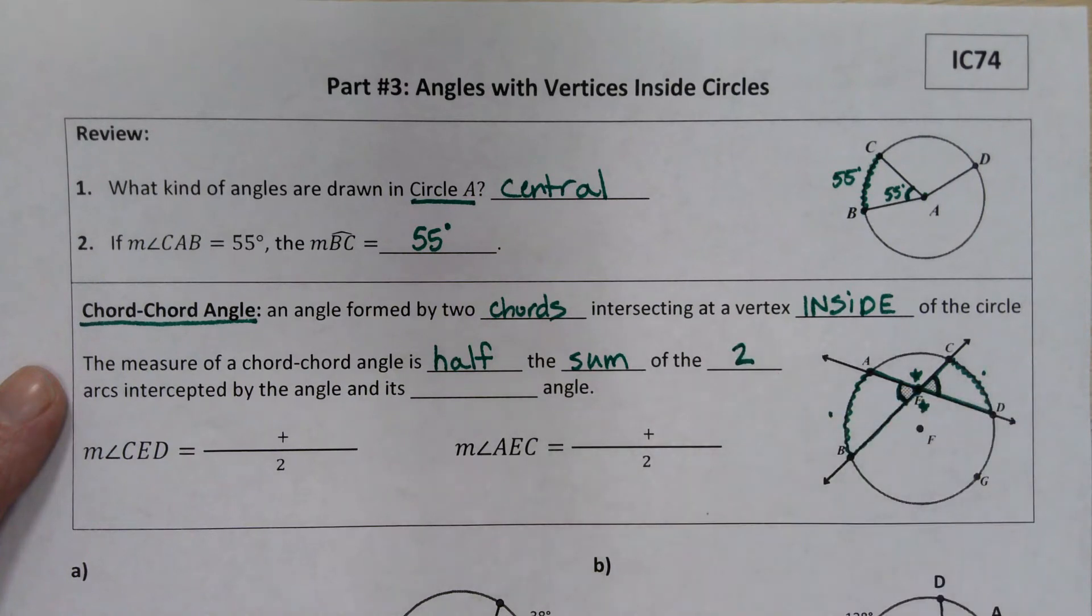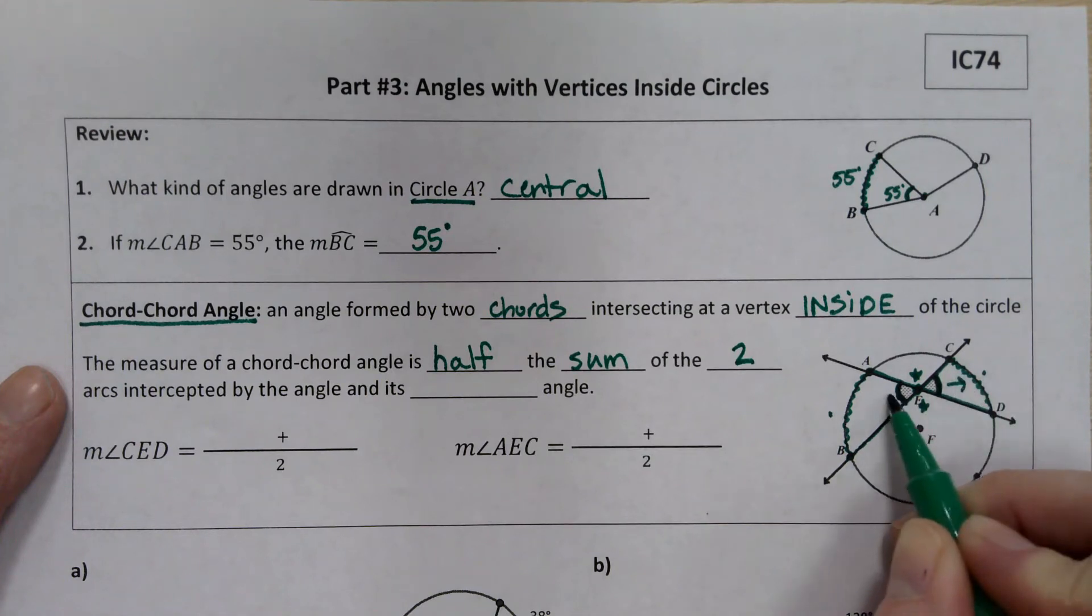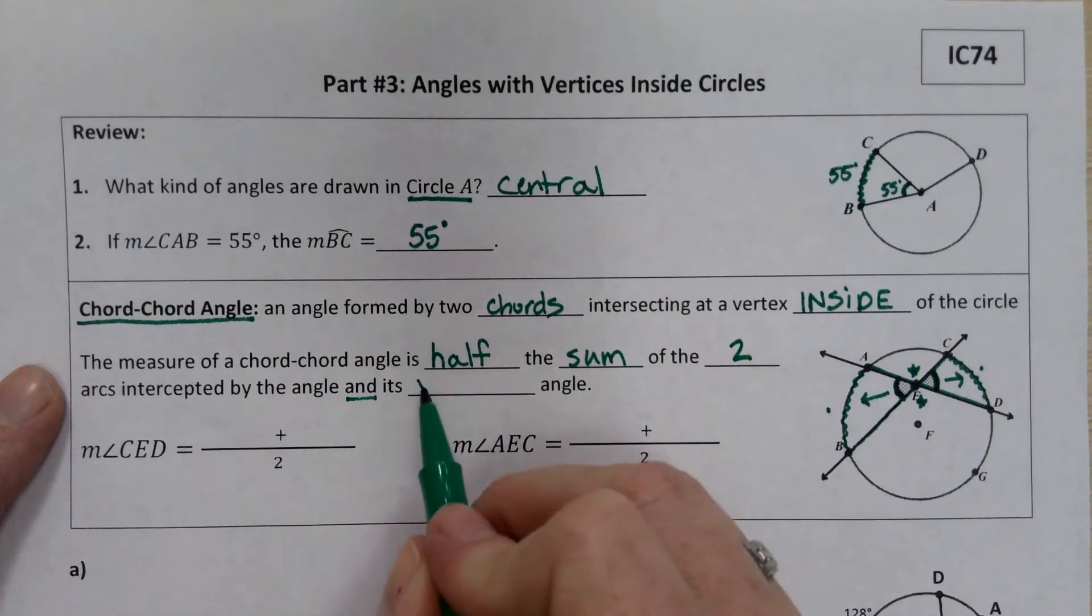So it's not going to be possible to find the measure of this angle or that angle based on just one intercepted arc. It's going to be based on two. So we're going to look at the two arcs that are intercepted by the angle and its vertical angle.